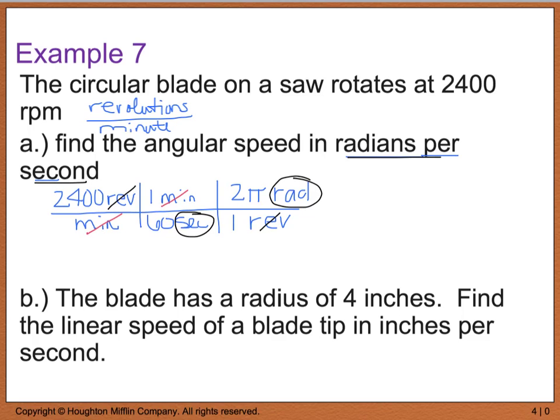And if you remember, angular speed, which is omega, is really equal to theta divided by t. Well, radians is a measure of theta. Seconds is a measure of time. So, this is all the work that I really have to do. So, 2,400 times 2 divided by 60 is going to give me 80. And I still have the pi. And this, then, is going to be radians per minute. So, part A now is complete.